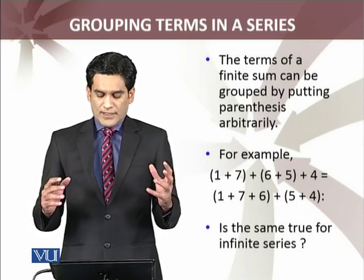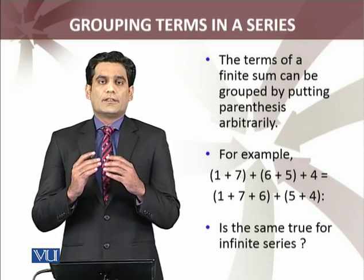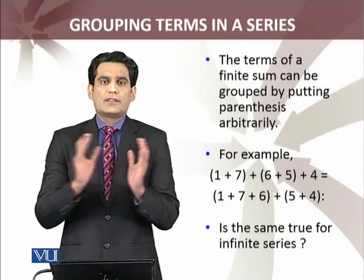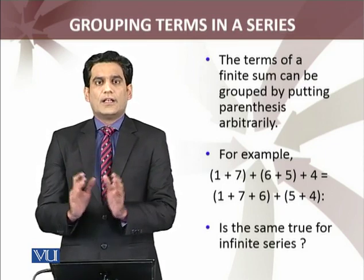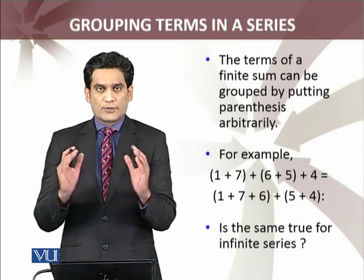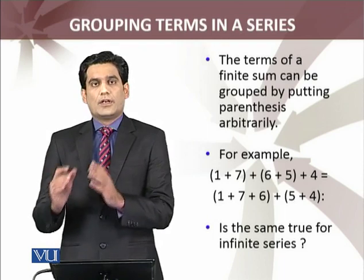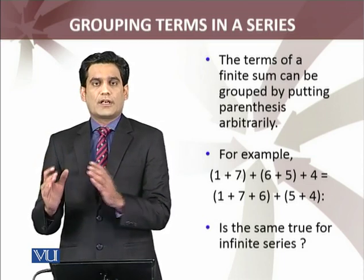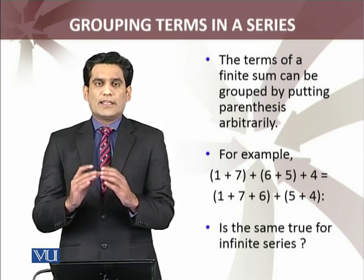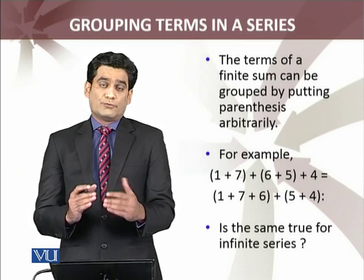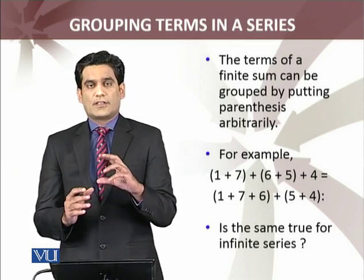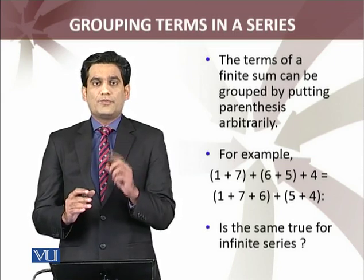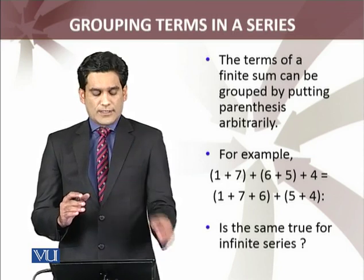The terms of a finite sum can be grouped by putting parentheses. Real numbers जो हैं, वो associative law को हम extend कर सकते हैं, और finite अगर आपके पास sum है, तो आप जहाँ मर्जी parentheses introduce करके group बनाते जाएं, answer will be the same. For example, 1 plus 7 का एक group बना दिया, plus 6 plus 5 का दूसरा group — या 1 plus 7 plus 6 का एक group और plus 5 plus 4 का। So finite sums में grouping doesn't matter, लेकिन infinite series में grouping के बारे में हम discuss करेंगे।